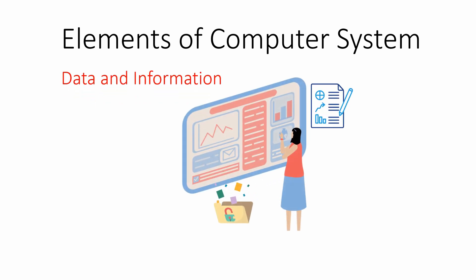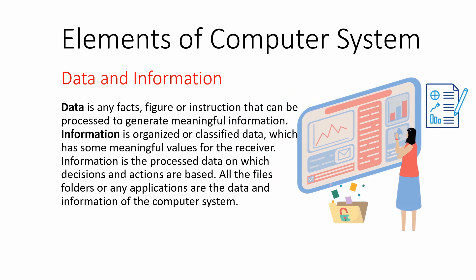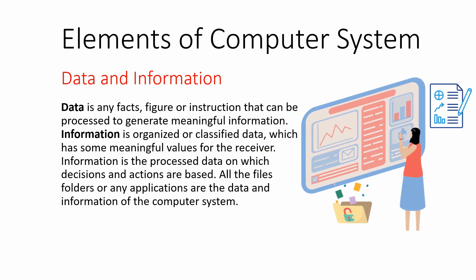Finally, we have another important element of a computer: the data and information present in our computer system. Data may be a fact, figure, or instruction that can be processed to generate meaningful information. Information is the organized or classified data which has some meaning — it is the processed form of data on the basis of which decisions can be made. All the files, folders, and images available in our computer system are considered as data or information.